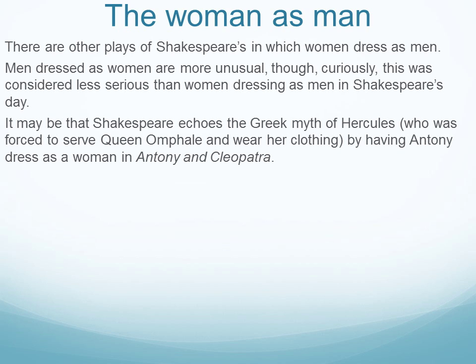An important point here: what was the intention of the woman dressing as a man? Was she trying to take a man's position and take on masculinity, or is she doing it because circumstances are forcing her, with her femininity still at heart? That makes the difference. Viola, for example, attracts no disapproval because she's doing what she has to do — circumstances have put her in this situation, so it's not subversive, not challenging masculinity.